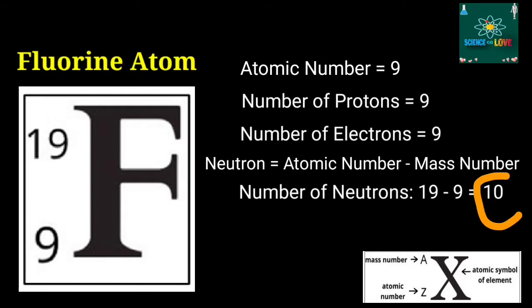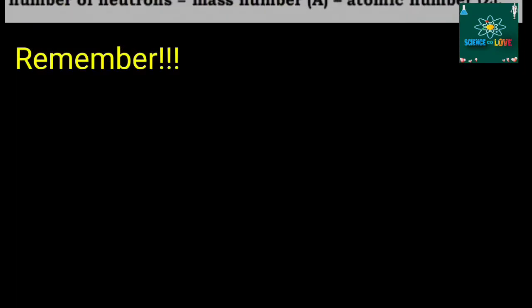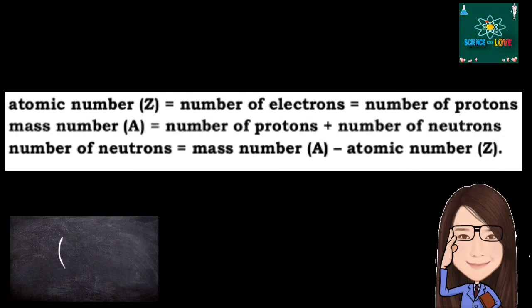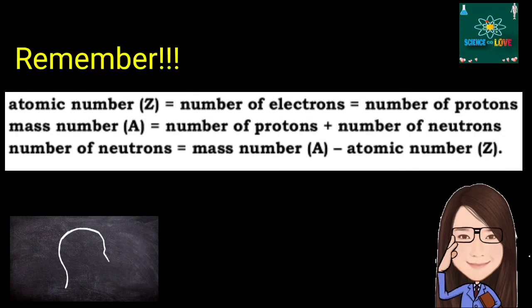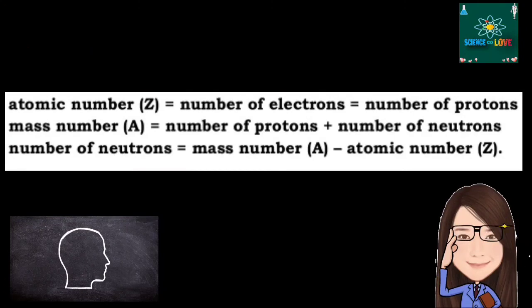Alright? Always remember that for a neutral atom, atomic number with the symbol Z is equal to the number of electrons equal number of protons.